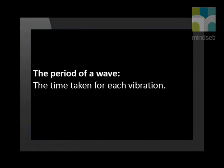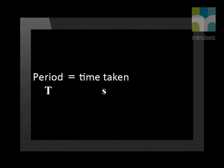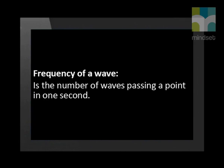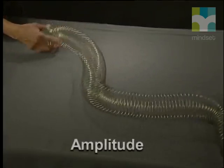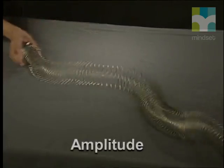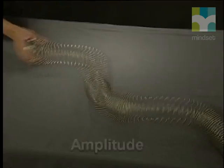We have come to the end of our lesson for today. Let's recap what we have learned. The period of the wave is the time taken for each vibration; we use the symbol T and measure it in seconds (abbreviated as lowercase s). The frequency of a wave is the number of complete waves passing a point in one second — the number of vibrations or cycles per second. We used the slinky spring to demonstrate important terminology. Remember, amplitude is the maximum displacement from the rest position.